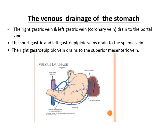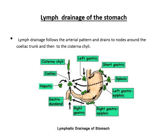The venous drainage of the stomach follows the arterial pattern. The right and left gastric veins (the left also called the coronary vein, as it drains the lower esophagus) drain to the portal vein. The short gastric and left gastroepiploic drain into the splenic vein. The right gastroepiploic drains to the superior mesenteric vein. The splenic and superior mesenteric veins form the portal vein. Lymphatic drainage follows the arterial pattern, draining to nodes around the celiac trunk and then to the cisterna chyli and thoracic duct.